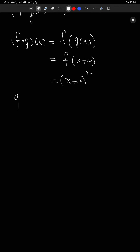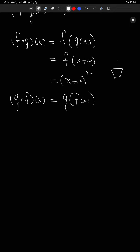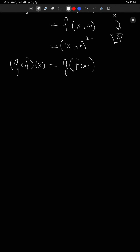Now let's do g after f of x. We're certainly allowed to do this. This would be g of f of x — you're doing f first, and then you're taking the result of that and putting it in as the input for g. So in terms of the boxes picture, you would be putting your x into the f function first, getting output of f of x, and putting that into the box for g, getting g of f of x ultimately.